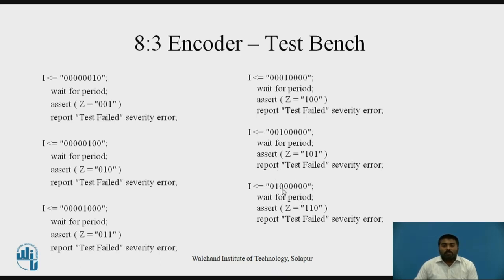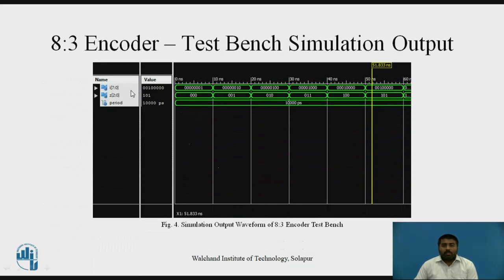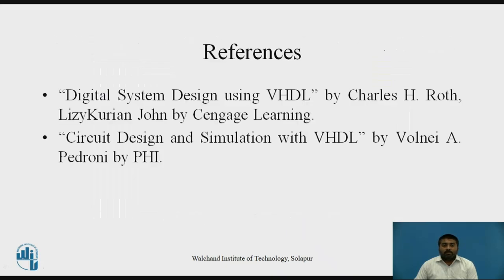Once you are done with all the input combinations, end the process and end the architecture. This is how you write the test bench. Running this code in a simulator gives an output waveform — I is the 8-bit input, Z is the 3-bit output — and for each input combination the output is shown. You can compare this with the previous VHDL module output to confirm your code is working properly. If there is any error, the waveform will be different. Thank you.